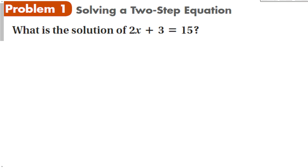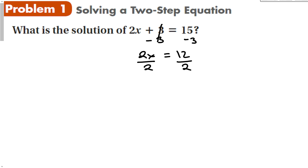Here's the same problem: 2x plus 3 is equal to 15. The first thing we're going to do is undo the addition by subtracting 3 from both sides. The idea is to focus on the variable and get it by itself, so we have to get every other number out of there. Those two cancel, and now we have 2x is equal to 12. To undo 2 times x, we divide both sides by 2 — always the inverse operation. Those cancel, and x is equal to 6.